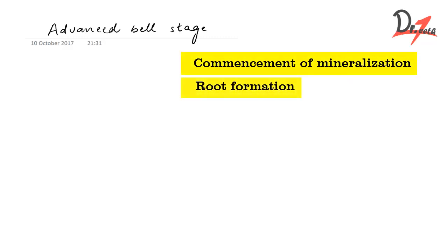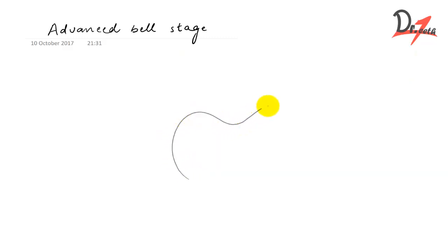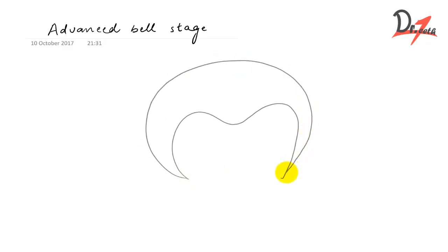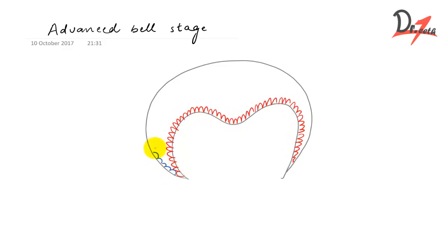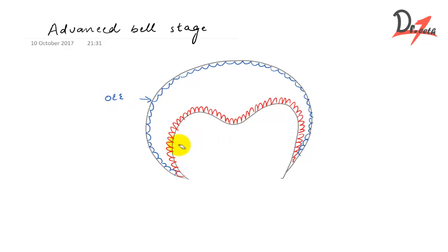So let us quickly draw a diagram which we had seen in the previous video. If you haven't seen that video, I would suggest you go check it out first because it was the early bell stage — we should go by sequence. So I'm going to quickly draw cells here. This is the inner enamel epithelium and this is the outer enamel epithelium. And then we have a few cells here — these are our odontoblasts.